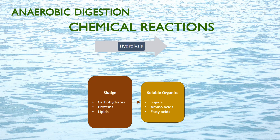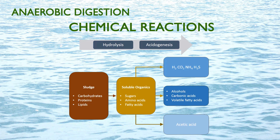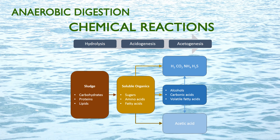Once all conditions are met, the sludge will first be hydrolyzed by exoenzymes secreted by the bacteria into simple sugars, amino acids, and long-chain fatty acids. These intermediate products are then further transformed into alcohols, volatile fatty acids, ammonium acetate with inorganic hydrogen gas, carbon dioxide, and hydrogen sulfide by acidogenesis. The acetogens then convert alcohols and volatile fatty acids into acetic acids, while producing more hydrogen gas and carbon dioxide.